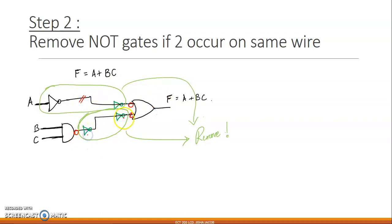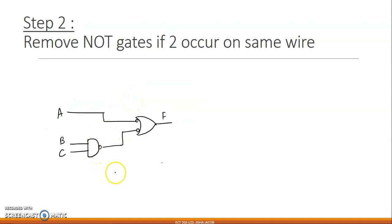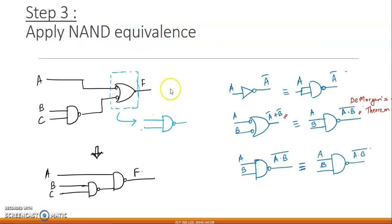After removing the pairs, this is the circuit we end up with: A with a NOT gate, bc given to an AND gate with a bubble at the output. From here we obtain the NAND gate equivalent circuit. To do so, we need to know the NAND gate equivalency of each of the bubbled gates.